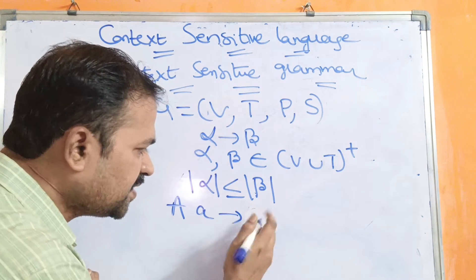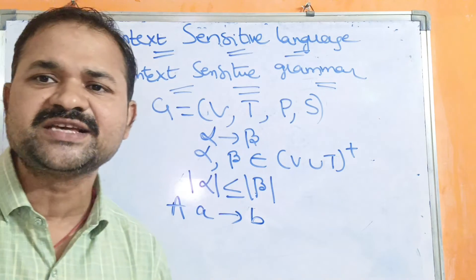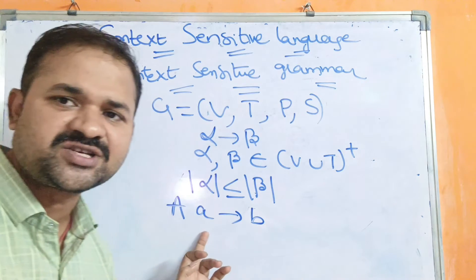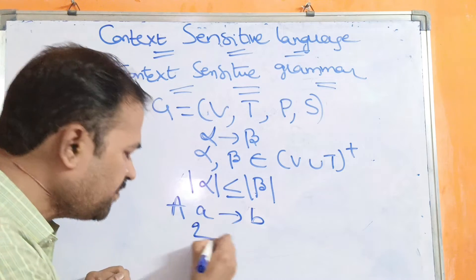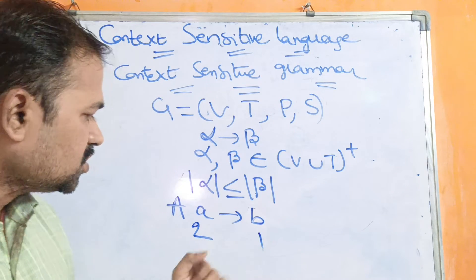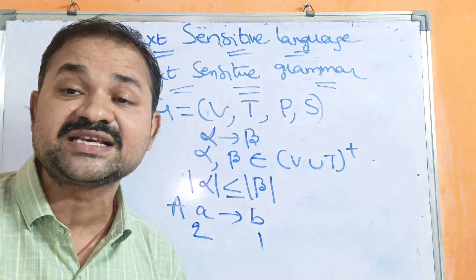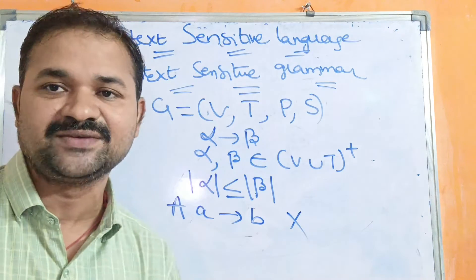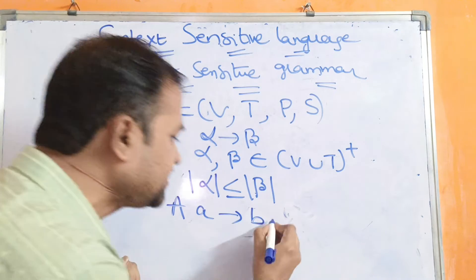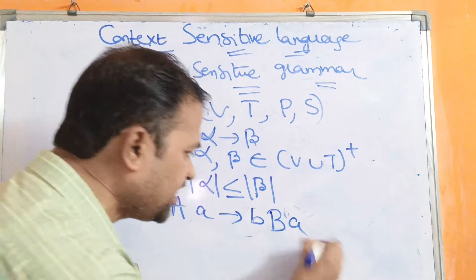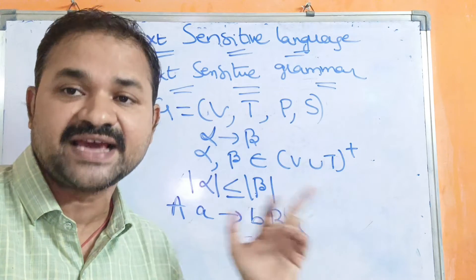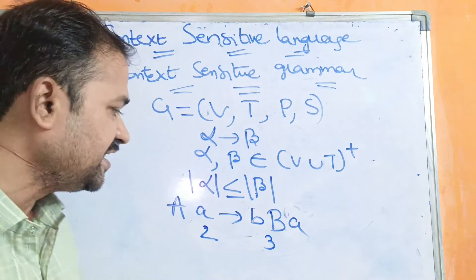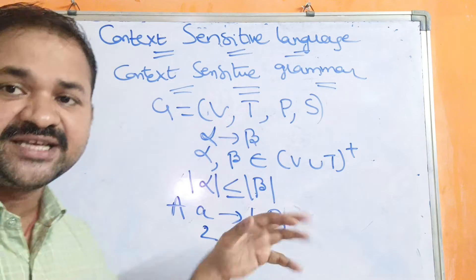Consider 'AB implies B'. Is it a context sensitive grammar? Yes, left hand side contains combinations of terminals and non-terminals. But mod alpha is two and mod beta is one, so two is less than or equal to one is false. So this production is not in CSG. If we modify it to 'AB implies ABA', then mod alpha is two and mod beta is three, so two is less than or equal to three — condition is true, this production is in CSG.